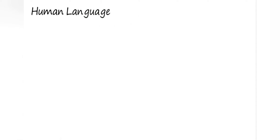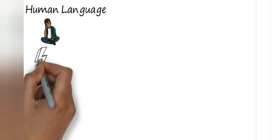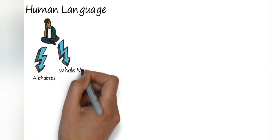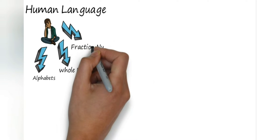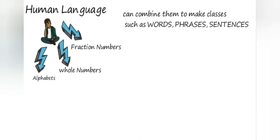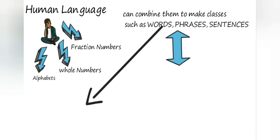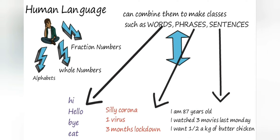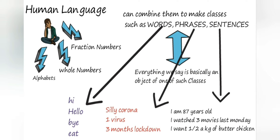Let's break it down further. In human language, how many basic data types do we have? We have alphabets, we have whole numbers 0, 1, 2, 3, and then we have fraction numbers which are basically a type of float. We combine all three in some combination and we come up with words, phrases, and sentences — they are nothing but classes. Objects are when you say 'hi', 'hello', 'bye', 'eat' — that's an object of the class 'words'. When you talk about 'silly corona' or 'one virus three months lockdown', that's a phrase — an object of the class 'phrases'.